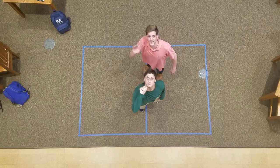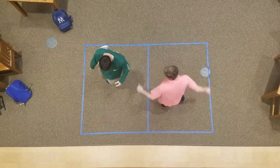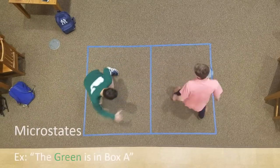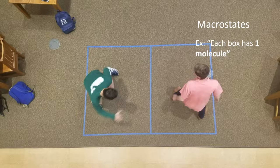In order to characterize entropy, we have to distinguish between microstates and macrostates. Microstates will distinguish which molecules are in each box, while macrostates will measure the quantity of molecules in a given box.